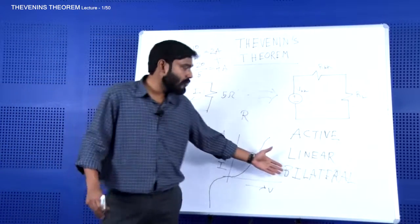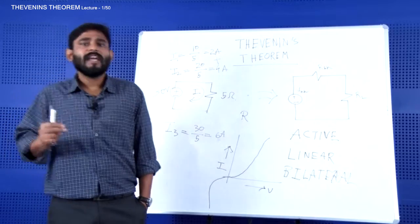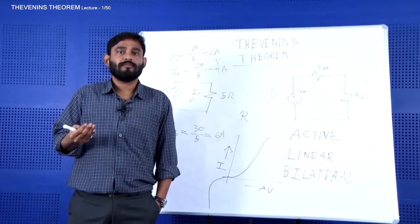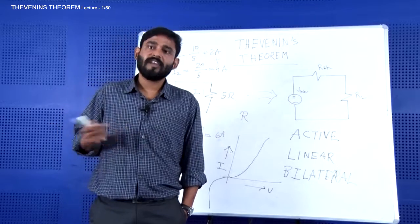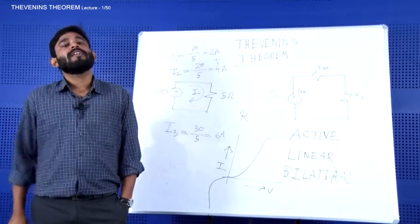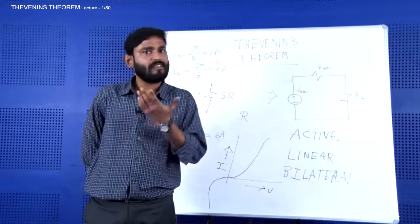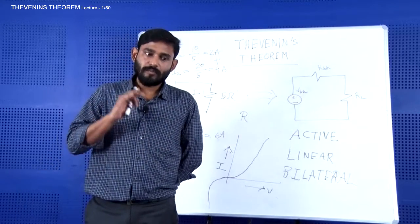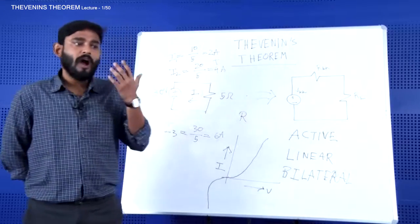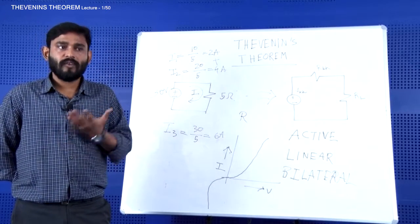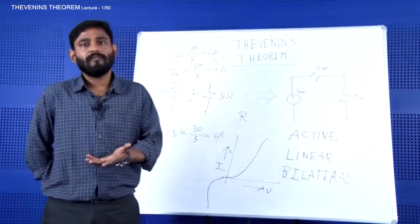The last keyword is 'bilateral.' A bilateral element behaves irrespective of the polarity of the applied voltage. In the case of a resistance, changing the polarity of the voltage does not change the magnitude of current — it only changes the direction of current flow. That is what we call a bilateral element.